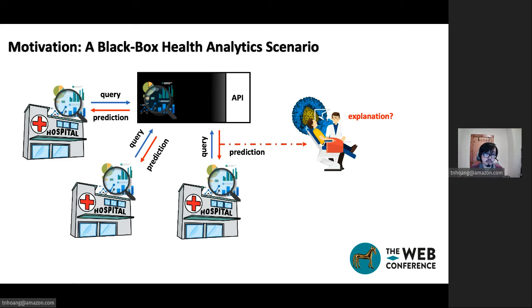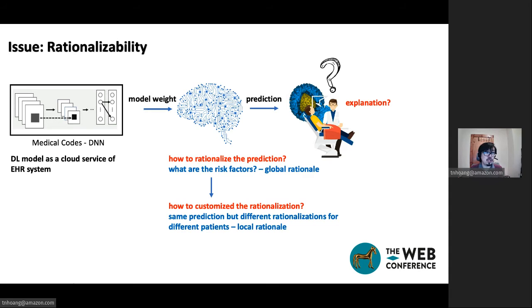However, from the perspective of a local institution, one concern of using such pre-trained service is that there is no transparency regarding its prediction. And this prevents local institution from understanding and inspecting whether its reasoning mechanism has accounted appropriately for potential bias in their local training data. And this is important because depending on such assessment, further customization of the pre-trained model might be necessary to customize better towards the local context.